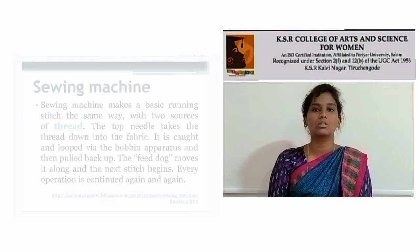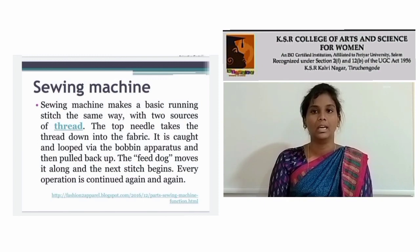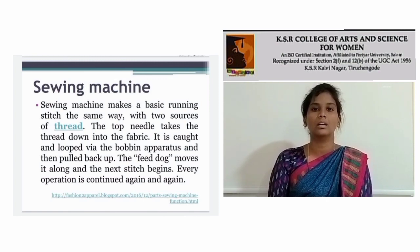Sewing machines make a basic running stitch the same way with two sources of thread. The top needle takes the thread down into the fabric. It is looped by the bobbin and then pulled back up. The foot moves and the next stitch begins. Every action continues again and again.